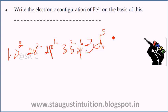So Fe3+ means Fe26 minus 3 = 23 electrons total. The sub-shell configuration is written accordingly.